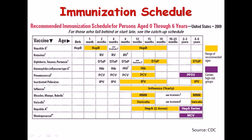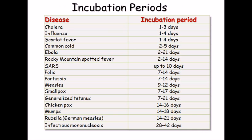This is the immunization schedule for small babies from birth through four to six years — you don't need to memorize it, it is just for reference. An incubation period chart is also shown: most diseases like cholera, influenza, and scarlet fever develop symptoms within three to four days, while others take two to three weeks.